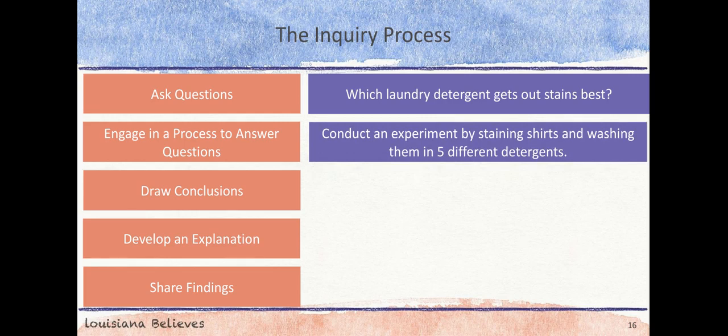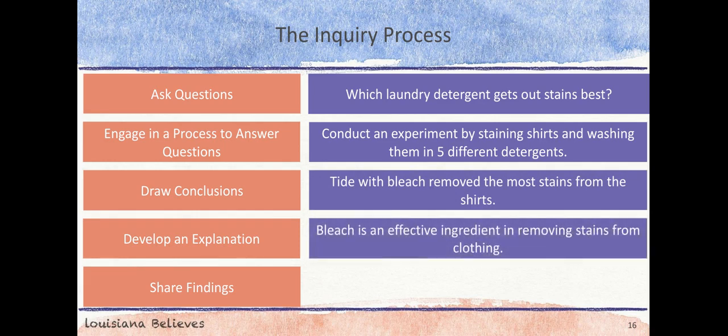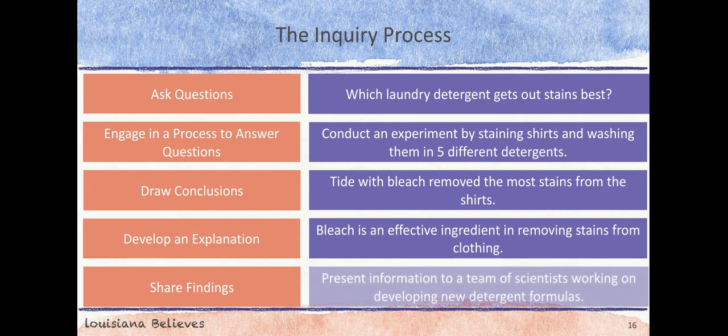Then, we draw conclusions about what happened. Tide with bleach removed the most stains in our experiment. This helps us develop an explanation about why we think it happened. This experiment led us to see that bleach is an effective ingredient in removing stains from clothing. Lastly, we share our findings by presenting our information to a team of scientists working on developing new detergent formulas.